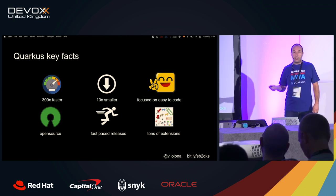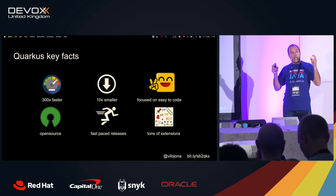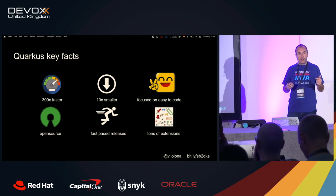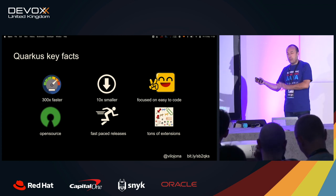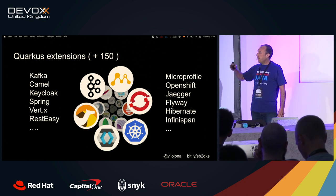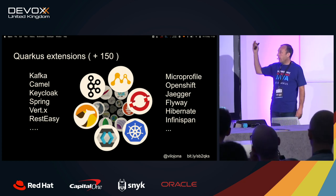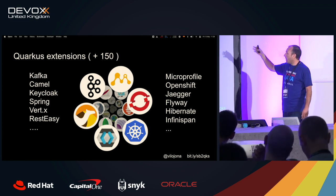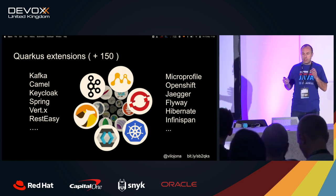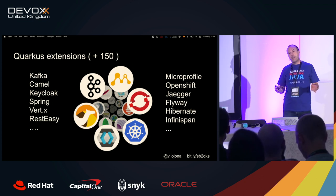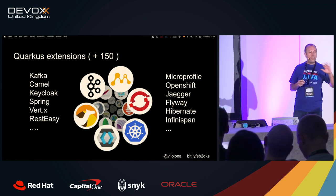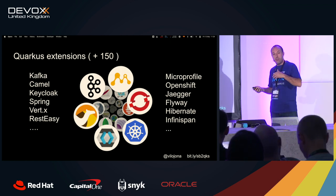There are tons of extensions. You need to use the library that is adapted to Quarkus — they are optimizing and reducing introspection in order to be able to be compiled into native. I was counting more than 150: Kafka, Camel, Keycloak, Spring, RestEasy, Vert.x, Jaeger, Flyway — you name it. And importantly, users can create their own extensions. You can go to the Quarkiverse repository and find companies and people creating more and more extensions.